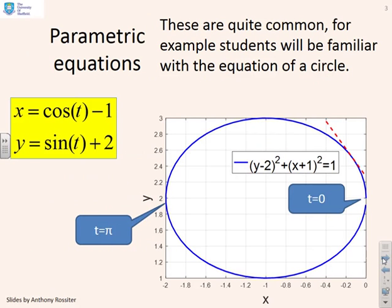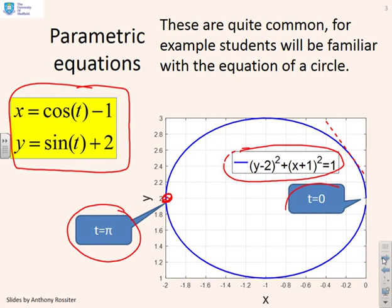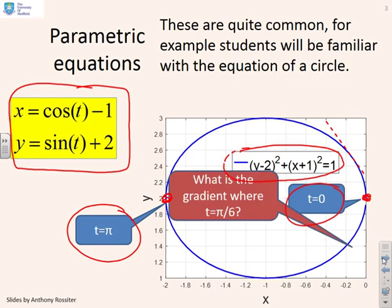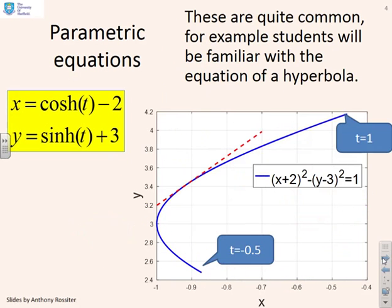Here's an example of parametric equations you're probably fairly familiar with: the equation of a circle. We have x equals cos(t) minus 1 and y equals sin(t) plus 2. You can show this gives the circle equation (y − 2)² + (x + 1)² = 1. Substituting specific values of t: at t = π you get one point, at t = 0 you get another. The key question is: how do we find the gradient for a specific value of t, for example when t = π/6?